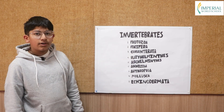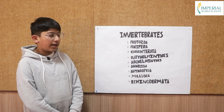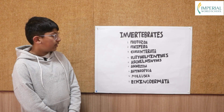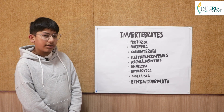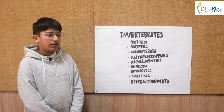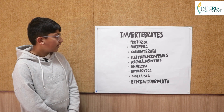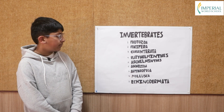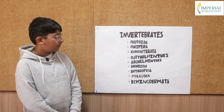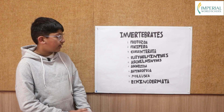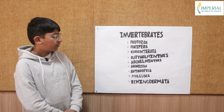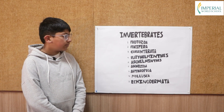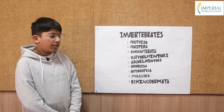Coelenterata are species that have a hollow body. One example of Coelenterata is a hydra. Platyhelminthes are worms that have a flat, soft body. An example of Platyhelminthes is a tapeworm.